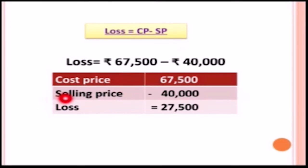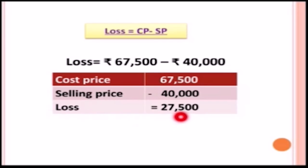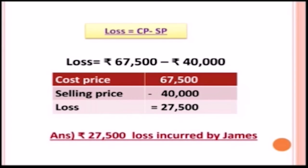Subtracting: zero minus zero is zero, zero minus zero is zero, five minus zero is five, seven minus zero is seven, six minus four is two. There is a loss of rupees twenty seven thousand five hundred. That is the loss incurred by James.